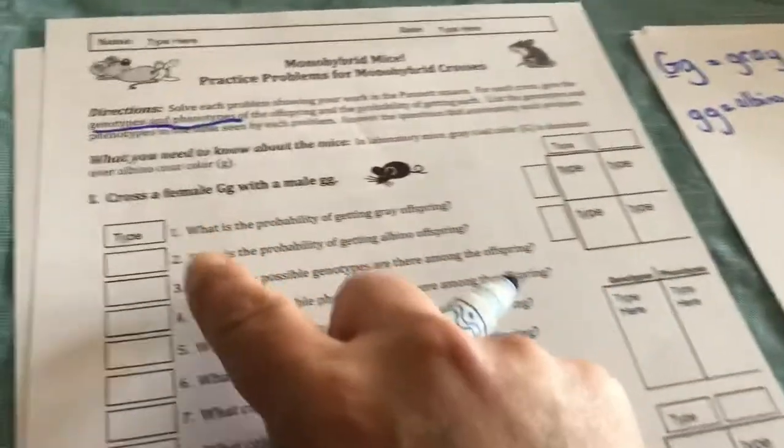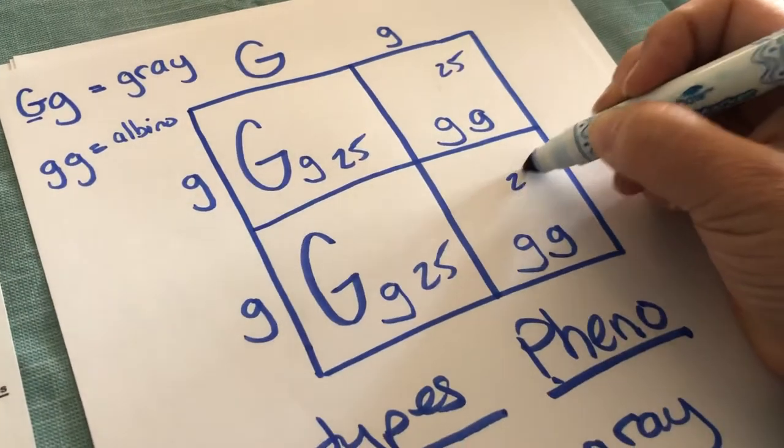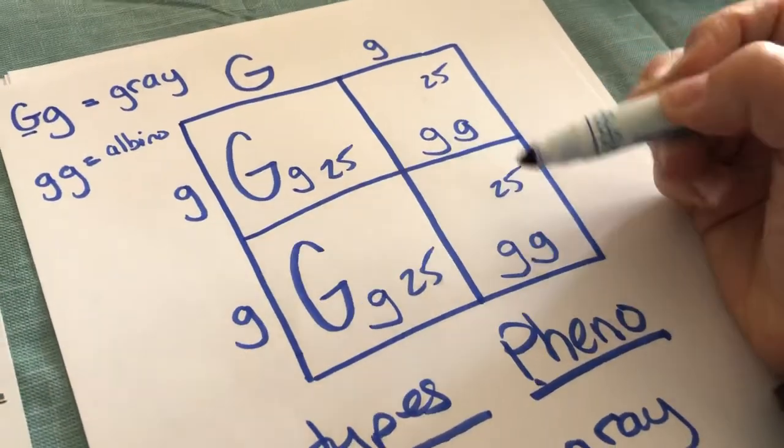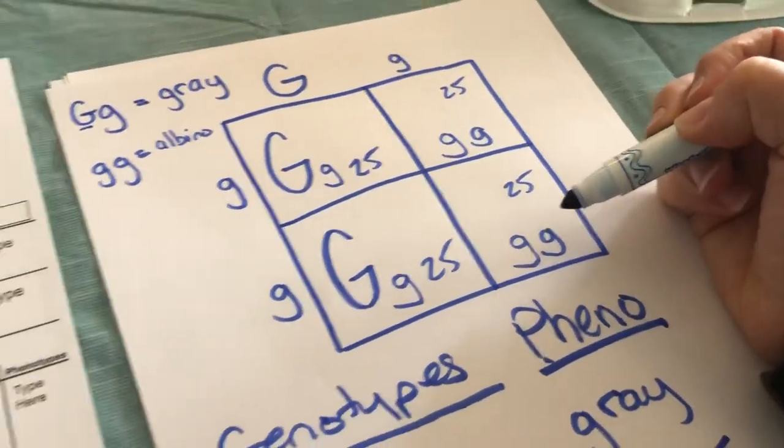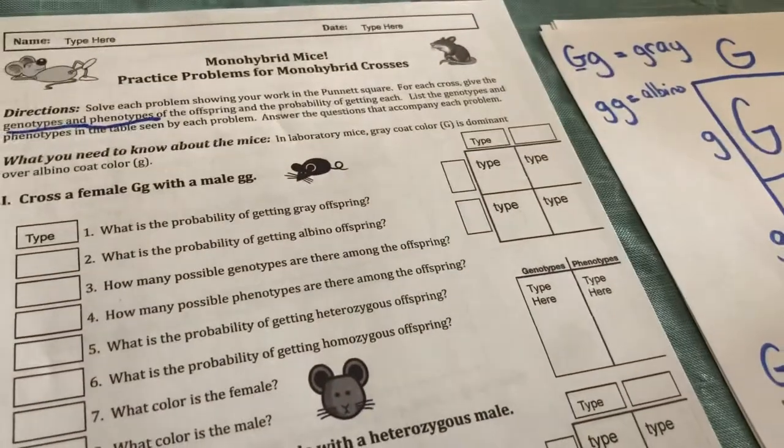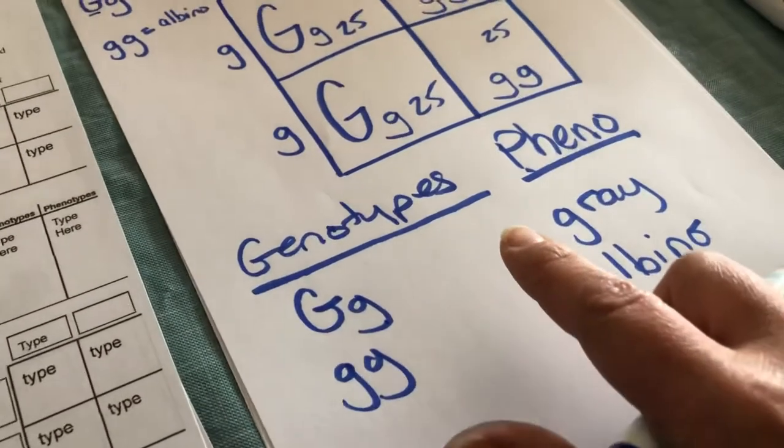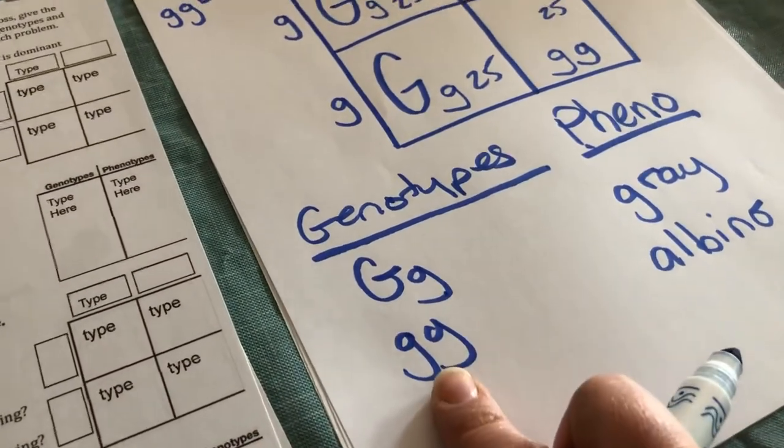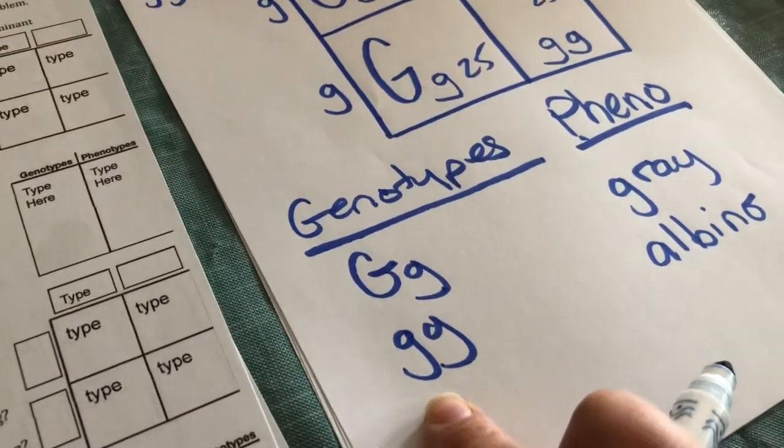Number two, what's the probability of getting albino offspring? This box is worth 25%, this box is worth 25%. I see genotypes for albino fur here. 25 plus 25 is a 50% chance of having little mouse babies that are albino. Number three, how many possible genotypes are there among the offspring? There are only two letter combinations, so there are only two possible genotypes that these offspring could have.